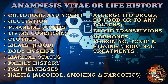We have to ask questions about the patient's childhood and youth, occupation, financial status, living conditions, whether the patient is wearing clothes according to the seasons, whether the patient is taking all general meals on time, the condition about body hygiene, and marital status. Under family history, we have to know whether the patient's family members have cancers, endocrine system disorders, cardiovascular and respiratory diseases. We also need to know about past illnesses and whether the patient has had any previous operations, habits like alcohol, smoking and narcotics intake, allergy to drugs, food or any other pollens, whether the patient has had previous blood transfusions and whether they are using hormones, and any history of poisoning or toxic and strong medical treatments.